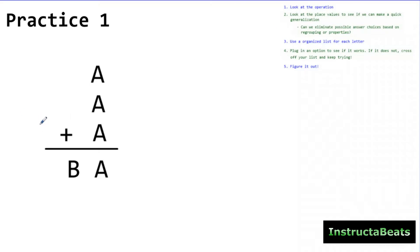So step number one, I want to look at the operation. I know I'm adding. That tells me something about regrouping. Step number two, we're going to look at the place values and see if we can make a quick generalization. And I can make a quick generalization. Whenever I added A plus A plus A, I had to regroup to my tens place. Biggest possible digit I could use, 9 plus 9 plus 9, would have made this a 27.